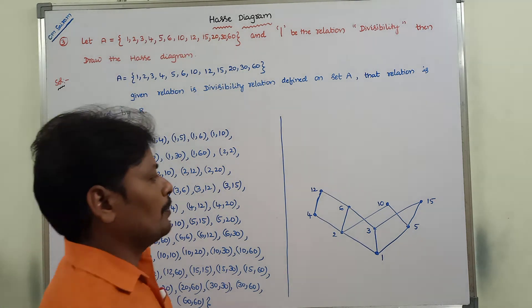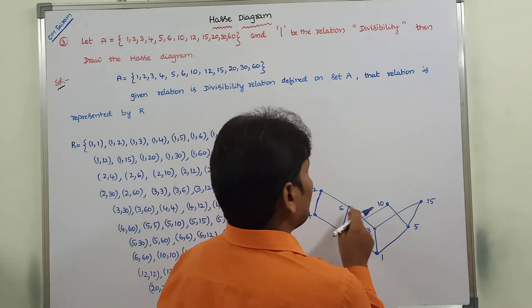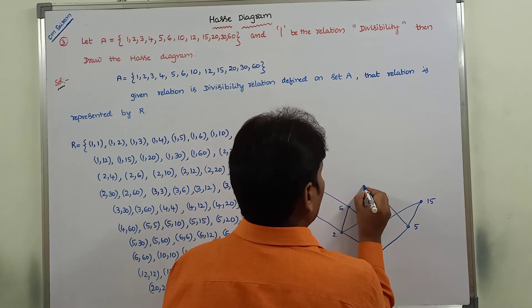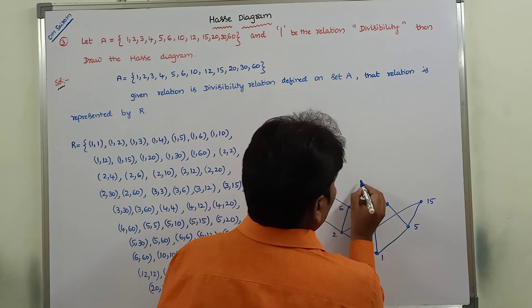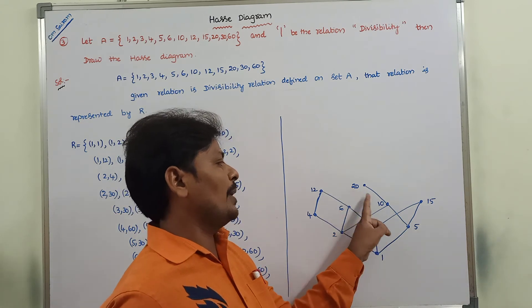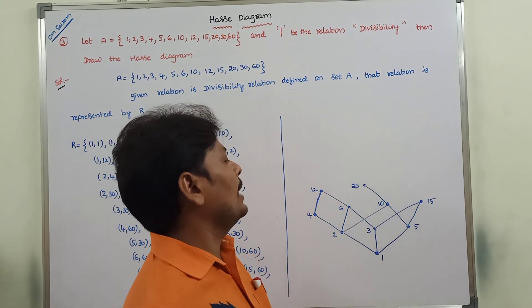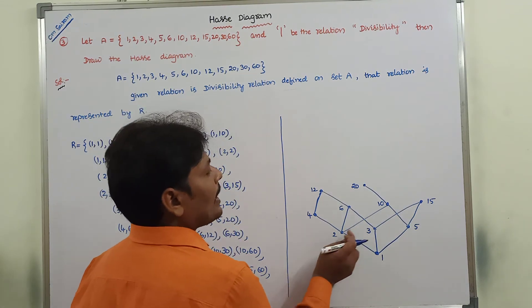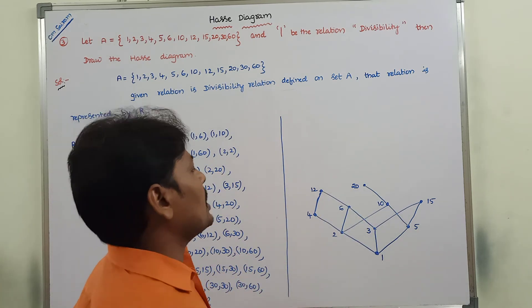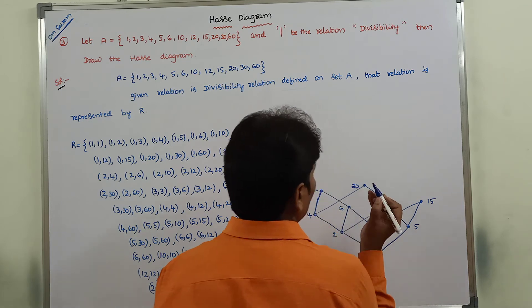Next element is 20: 12 does not divide 20, 6 does not divide 20, but 10 divides 20, so we draw an edge between 10 and 20. By transitivity 5 divides 10 and 10 divides 20, so 5 automatically divides 20. Also 4 divides 20, so we draw an edge between 4 and 20.